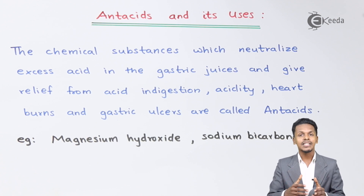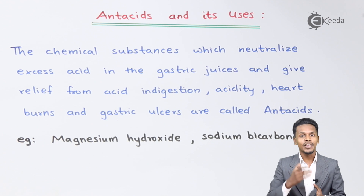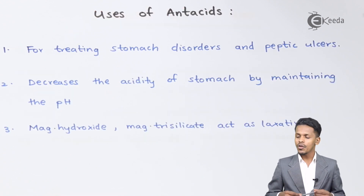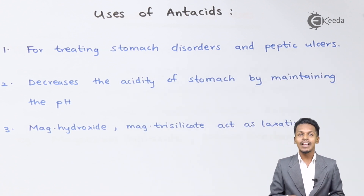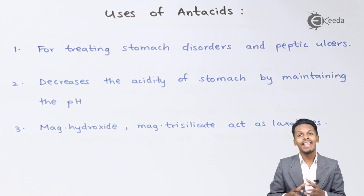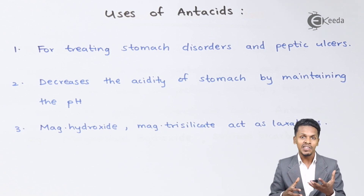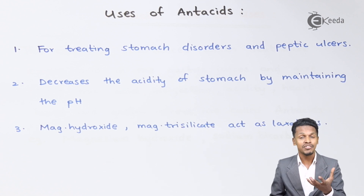Now let us understand the different uses of antacids and why they are used for maintaining the pH value. The uses of antacids include treating stomach disorders and peptic ulcers. Because of junk foods or other foods that affect our stomach, there is a release of histamine, and that histamine actually produces ulcers. So antacids are used because they neutralize the acid produced in our stomach.